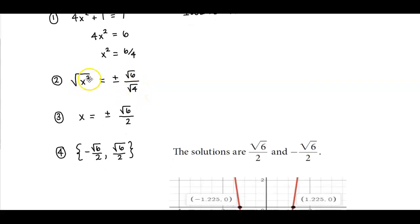And so what do we have to square to get x squared? The answer is x, which is equal to plus or minus. The square root of 6 is not a perfect square, so we leave that alone. What do we have to square to get 4 is 2.